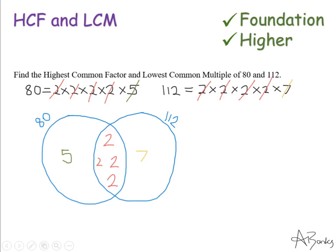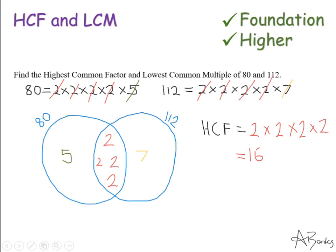Now I can find the highest common factor and lowest common multiple. The HCF comes from the middle section — the numbers both lists have in common. If I multiply those together I get the highest common factor: 2 times 2 times 2 times 2, which is the same as 4 times 4, so the answer is 16. That's the highest common factor done.